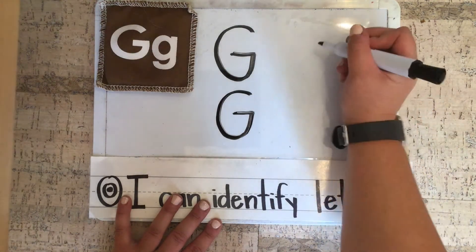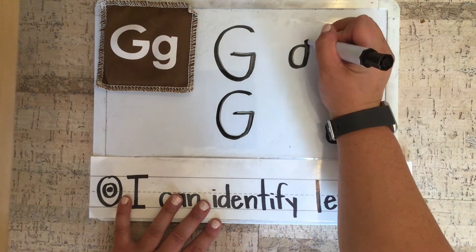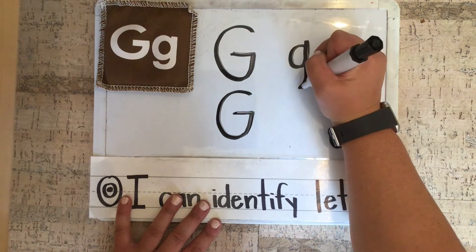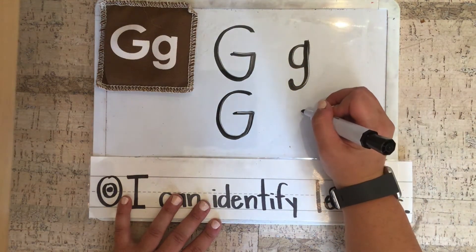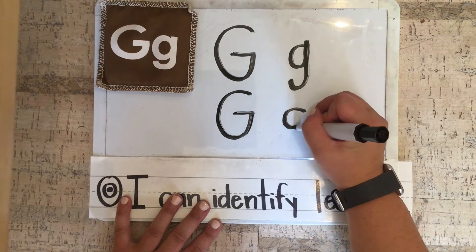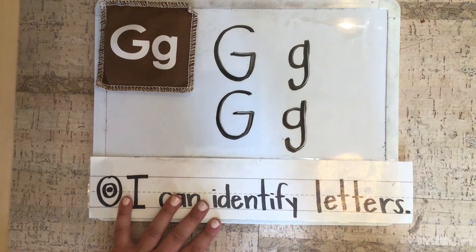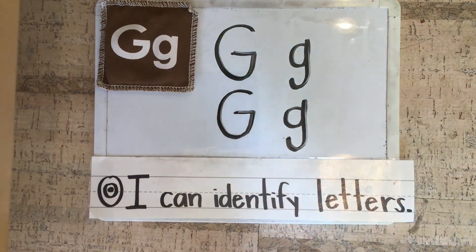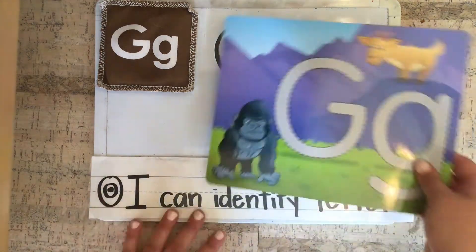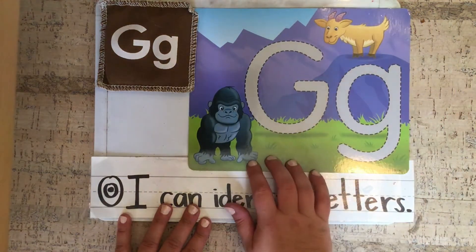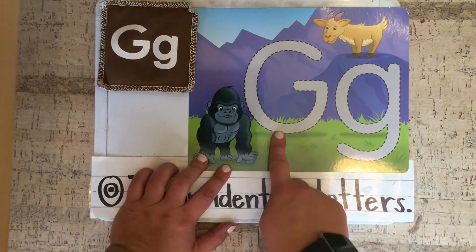Lowercase G: I'm going to make a little C curve, push up, pull down, and give it a hook. Let's do that again: little C curve, push up, pull down, and give it a hook. This is the letter G. Now I want you to practice writing the letter G. This is the letter G again, like gorilla and goat.